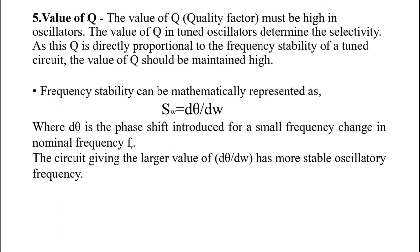The fifth factor is the quality factor Q of the reactive elements. The Q-factor of inductors and capacitors must be very high, indicating high stability. A lower Q-factor means less stability. Frequency stability S is expressed as dθ/dω — the phase shift introduced for a small frequency change around the nominal frequency fr. The smaller the frequency change that produces a large phase shift, the more stable the oscillator.